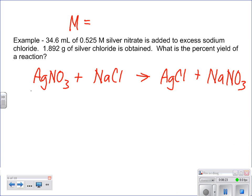Once I wrote that stuff underneath, I never had to look at this again. Told me everything I needed right there in my chemical reaction. We're starting off with 34.6 milliliters of 0.525 molar silver nitrate. We also know that 1.892 grams of silver chloride is obtained. When you ask yourself what value is that, you should be answering with the actual value.